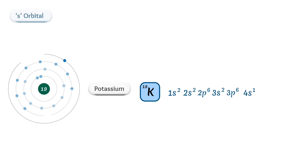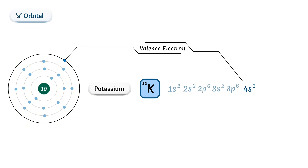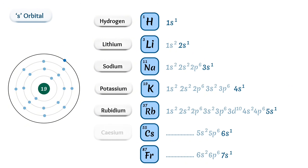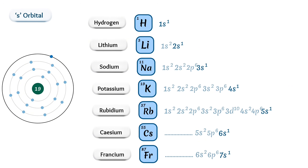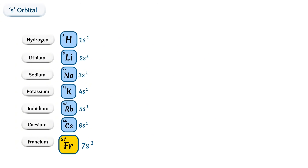For the potassium element, the fourth shell is the outermost shell, which contains one electron. This electron is called a valence electron. In a potassium atom, the valence electron is placed in the s orbital. Other elements also have only one valence electron in the s orbital: hydrogen, lithium, sodium, rubidium, cesium, and francium. So we arrange these elements in a vertical column in order of increasing atomic number — hydrogen at the top, francium at the bottom. We name this column Group 1.